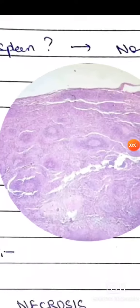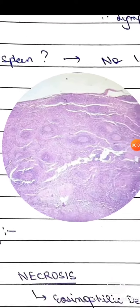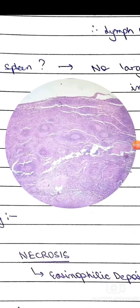Hello everyone. This is our histopathological slide. First of all, we need to identify which organ it is. We have two identification marks: first is the fibrous capsule, and second is the lymphoid follicles. So it's a lymph node.